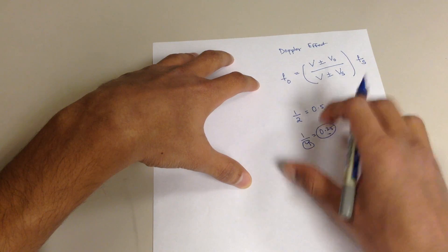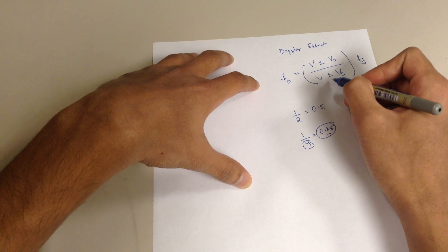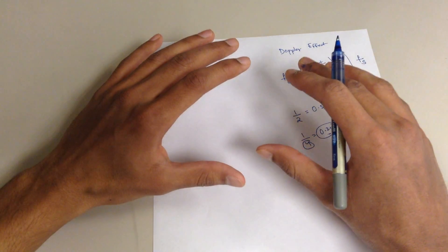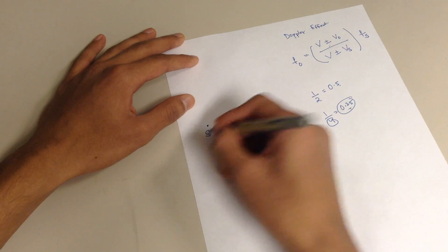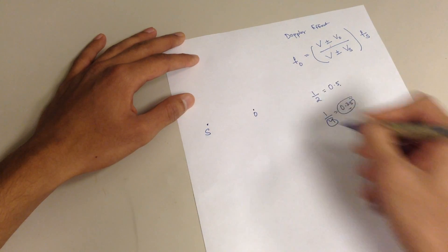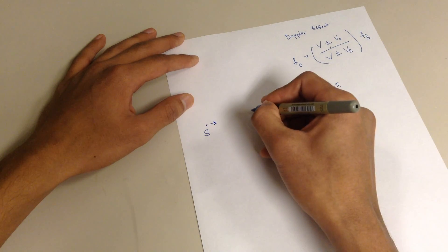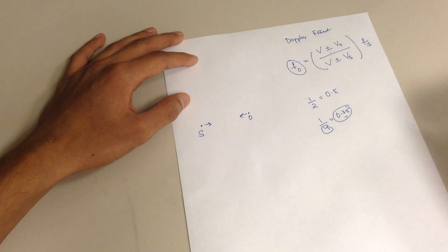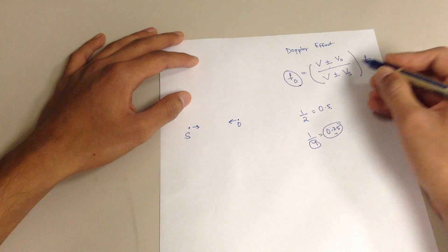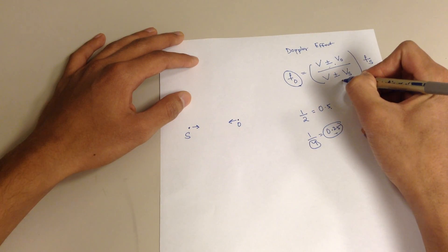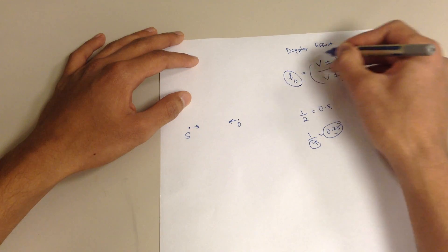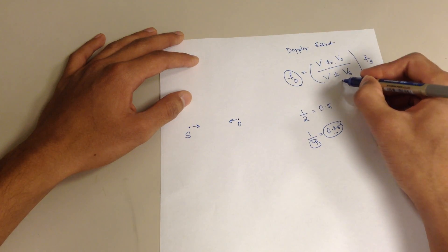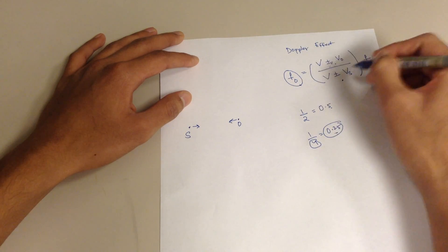We'll use this fact to determine whether to add or subtract in the formula. It's easier if you first determine if the objects are moving closer to each other or going away from each other. Say, for example, this is the source of the sound and this is the observer, and both are coming closer to each other. When they're coming closer, the observer's frequency is going to be bigger. To make the fraction bigger, you need a bigger numerator or a smaller denominator — so you add the numerator and subtract the denominator, then multiply by the frequency of the source.